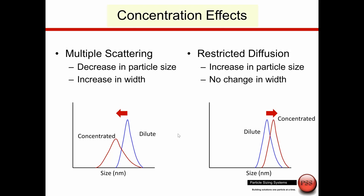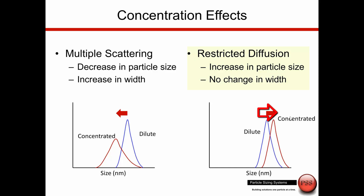Some generalized guidelines for understanding concentration effects: if we see a shift to smaller sizes in the concentrated sample compared to the dilute one, we're dealing with multiple scattering. If we see a larger result in the concentrated sample, we're probably dealing with restricted diffusion. The width doesn't change with restricted diffusion, but we will see an increase in the polydispersity index with multiple scattering. If results are changing with concentration, that's not acceptable.